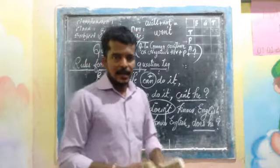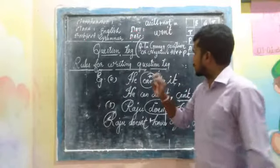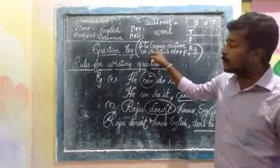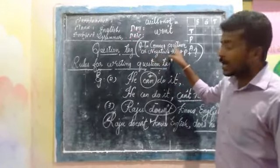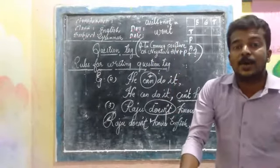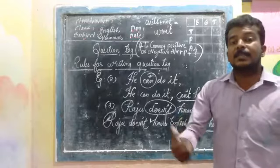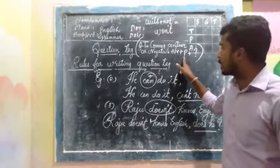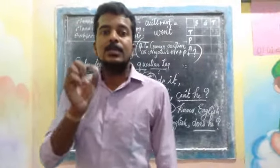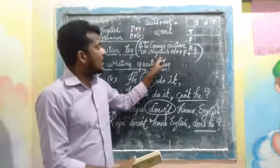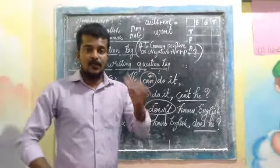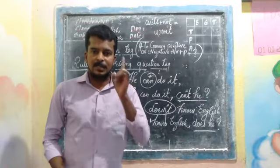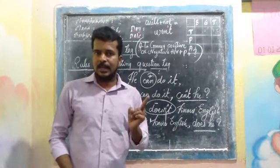To summarize, the rules for writing question tags are: first, remove the full stop and put a comma; second, pick out the helping word — if the sentence is positive, the tag will be negative, and if negative, the tag will be positive; third, write the pronoun of the subject; and fourth, put a question mark at the end. If you learn this, you will get one mark in the examination, and this question is asked in MCQ format.